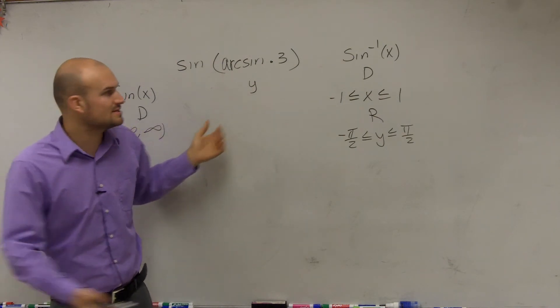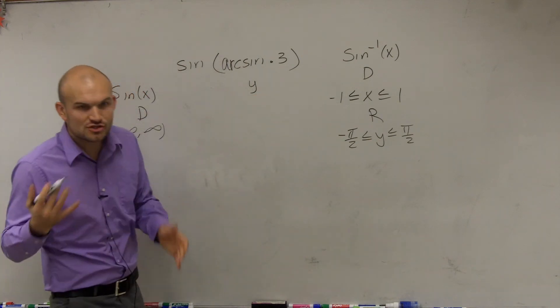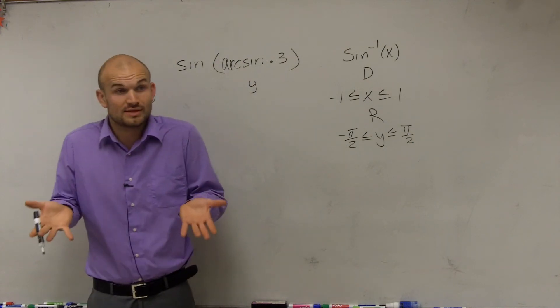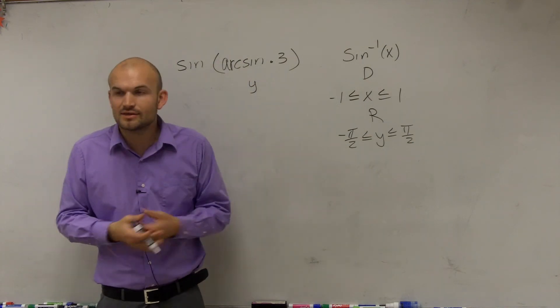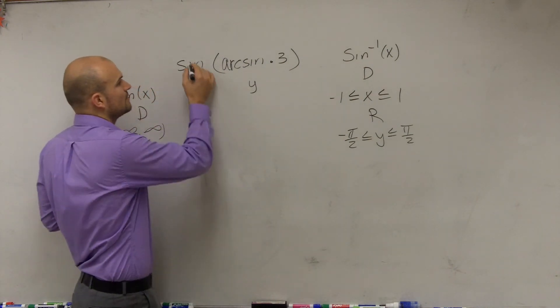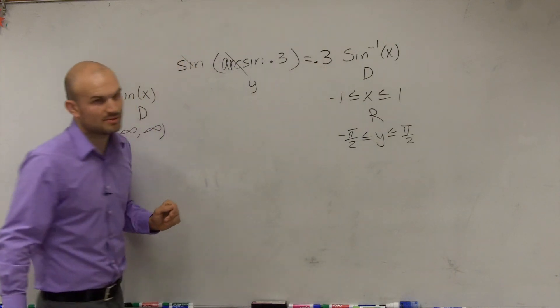So therefore, what I'm really doing is I definitely can take the inverse sine of this, and then I can take the sine of it. So what exactly are sine and inverse sine doing to each other? They really just kind of cancel their operations out, or they undo each other out. So really, my answer is just going to be 0.3.